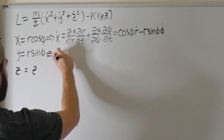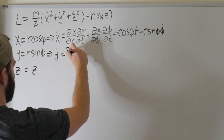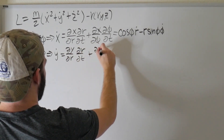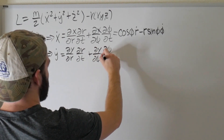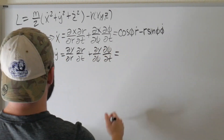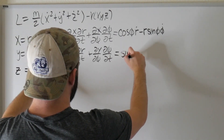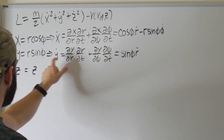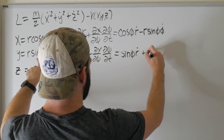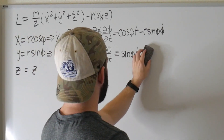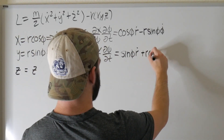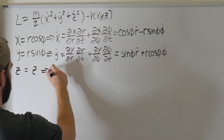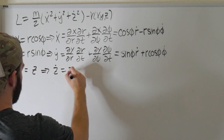The same logic applies to y_dot: that's (dy/dr)(dr/dt) plus (dy/dφ)(dφ/dt), which equals sine φ · r_dot. The derivative of y with respect to φ is r cosine φ, so y_dot equals sine φ · r_dot plus r cosine φ · φ_dot. And z_dot equals z_dot — z doesn't change.